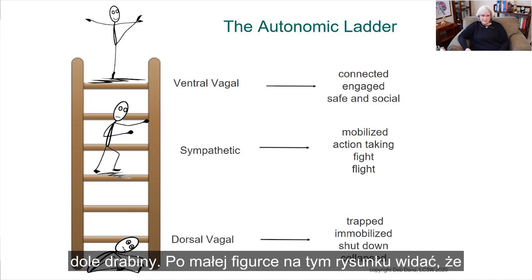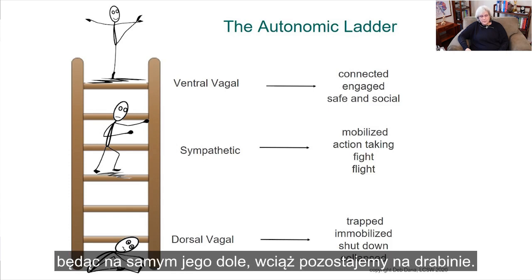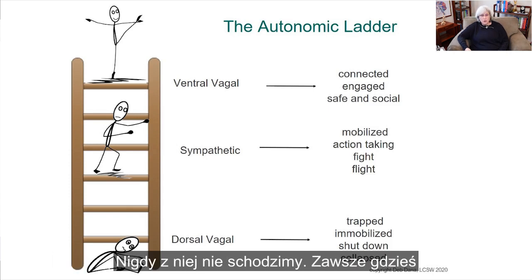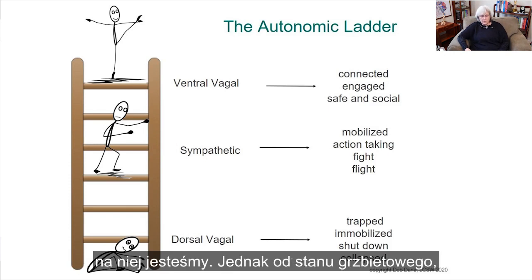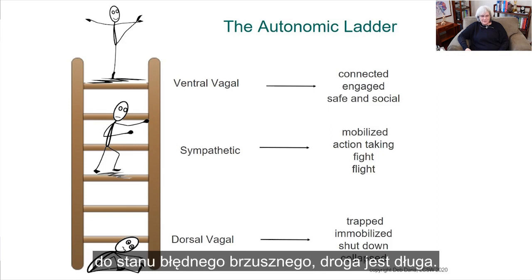You can see a little figure at the bottom of the ladder — I'm still on the ladder. We're never off our autonomic ladder; we're always on it somewhere. But from dorsal at the bottom, you can see it's a long way to get back to the top, to ventral.